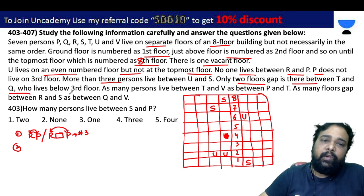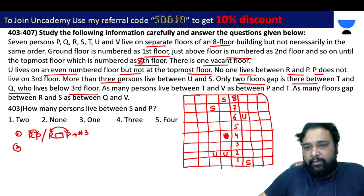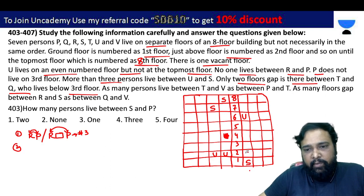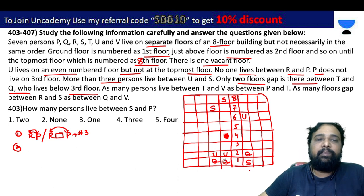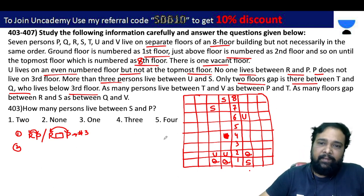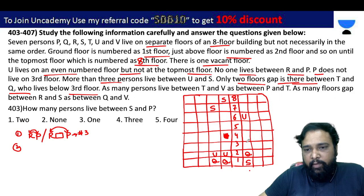Q lives below the 3rd floor, so Q is on the 1st or 2nd floor. In one case, Q is on the 1st floor, and in another, Q is on the 2nd floor. In these two cases U is in 2nd place, Q is in 1st place. There are 2 floors between T and Q. T and Q have a gap of 2 floors.